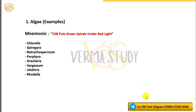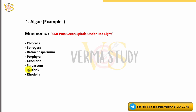1. Algae (LG) Examples Mnemonic: 'CSB puts green spirals under red light.' This covers Chlorella, Spirogyra, Batrachospermum, Porphyra, Gracilaria, Sargassum, Ectocarpus, and Rhodella.